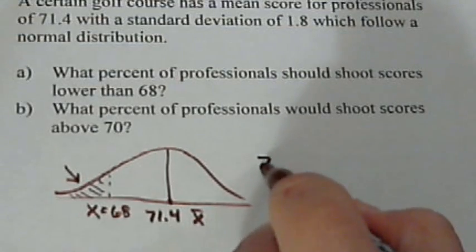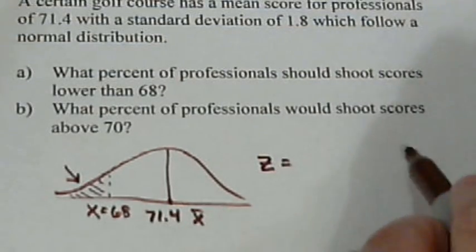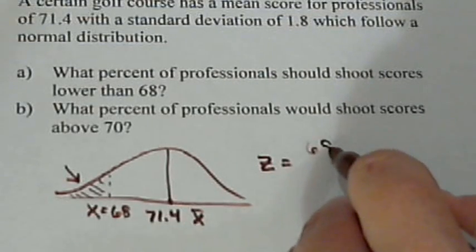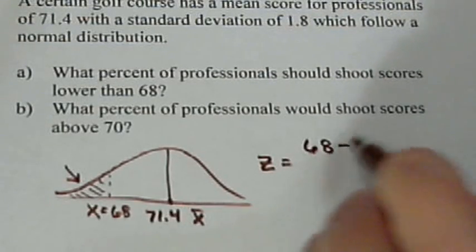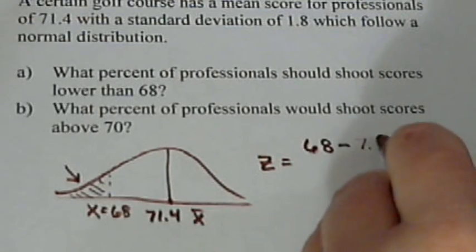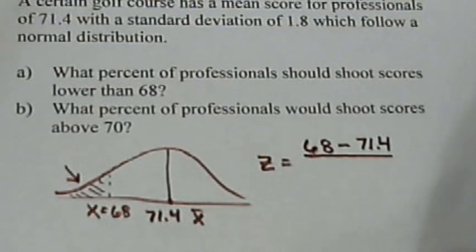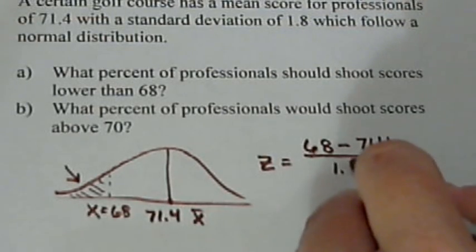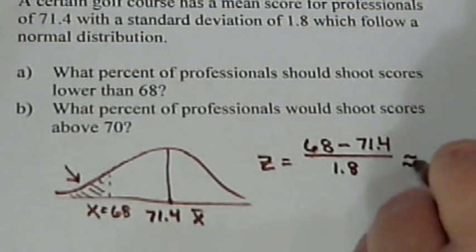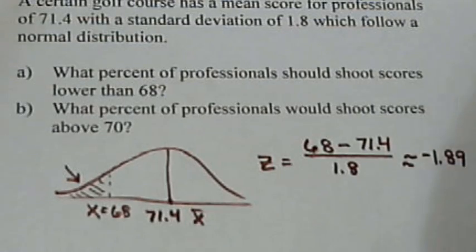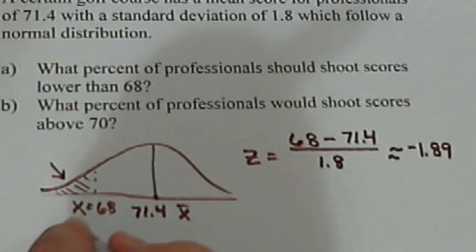All right, first thing we have to do is calculate our z value for this problem. So the z would be our score, 68, minus the mean, 71.4, all divided by 1.8. And this comes out to be about negative 1.89. Now what we need to do is that makes our z value here negative 1.89.